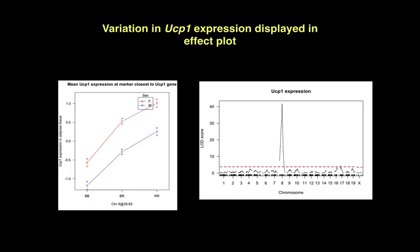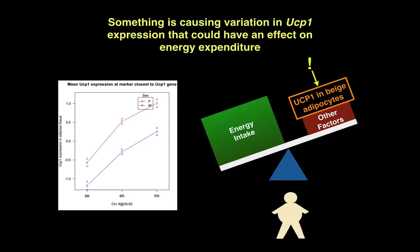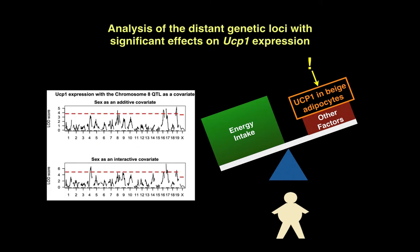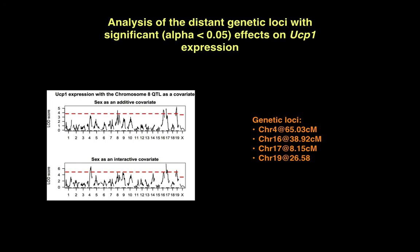We wanted to further examine this genetic locus, so we looked at an effect plot. We found that mice with the BB genotype — homozygous with B6 alleles — had significantly lower UCP1 expression than mice that were homozygous with BTBR alleles. This showed substantial variation in UCP1 expression between the two strains, confirming it was a good model. We then looked back at the genome scans of UCP1 expression and removed the peak on chromosome 8 to look for other significant peaks, finding four genetic loci with significant effects on chromosomes 4, 16, 17, and 19.